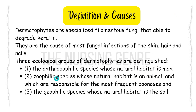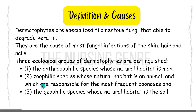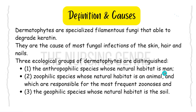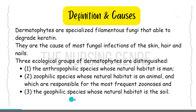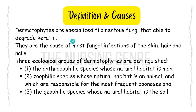Three ecological groups of dermatophytes are distinguished. The first is anthropophilic species, whose natural habitat is man. The second is zoophilic species, which causes infection in animals. The third is geophilic species, whose natural habitat is soil. These cause the condition called dermatophytosis.